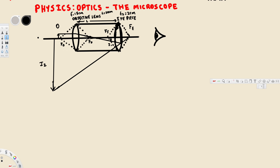In the diagram we have an object placed a little bit above the focal point of the objective. When light rays go through the objective lens they pass through the focal point and form a first image. After hitting the second lens, the eyepiece, the observer looks through it. The brain interprets the rays as coming from a virtual image, which appears upside down — so this is a virtual image.